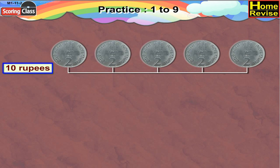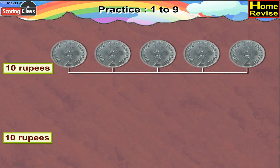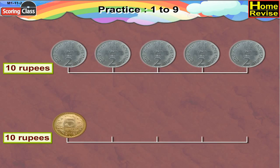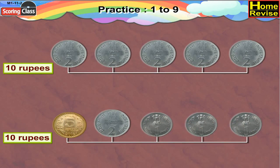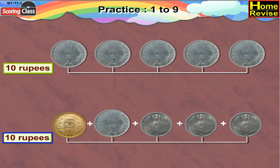Now let us find another way to make 10 Rupees. For that we can take a 5 Rupees coin, a 2 Rupees coin, and 3 one-Rupee coins. That would be 5 Rupees plus 2 Rupees, that is 7 Rupees. Plus 1 Rupee is 8 Rupees, plus 1 Rupee is 9 Rupees, plus 1 Rupee would be 10 Rupees.